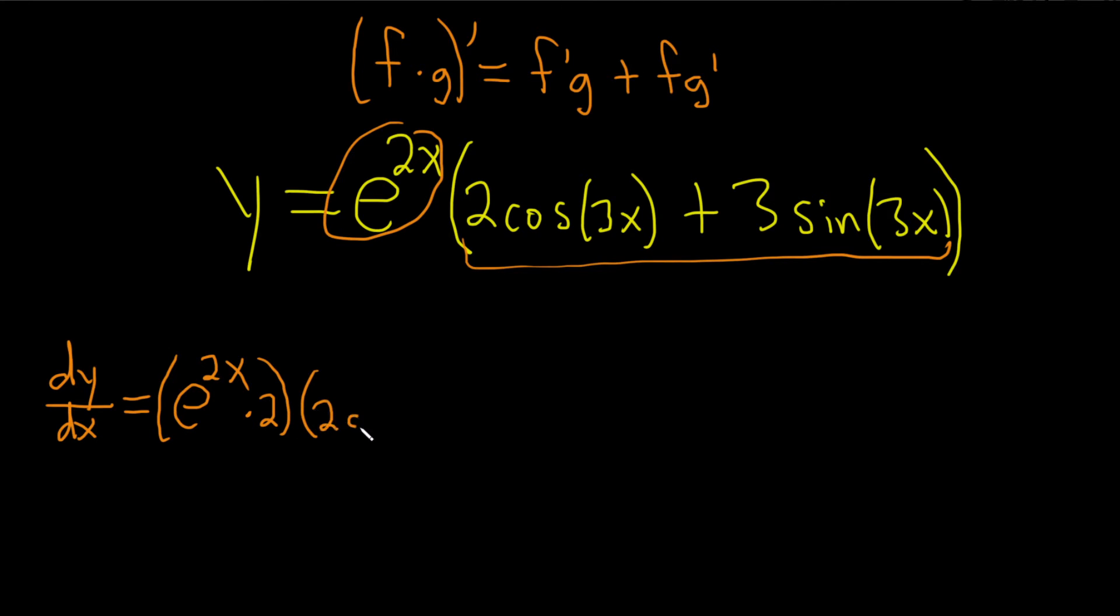So 2 cosine of 3x, just leaving it alone. We're just writing it again. This is our g plus 3 sine 3x.